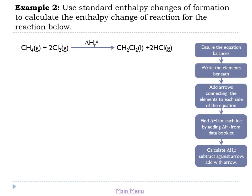Example two: use standard enthalpy changes of formation to calculate the enthalpy change of reaction for the reaction below. This one is a bit more complicated for a couple of reasons — on the product side we've got two compounds, and we've also got two HCls. So we'll need to account for both when we calculate ΔH2. First, ensure it balances: 1 carbon on each side, 4 hydrogens on each side, 4 chlorines on each side — yes, it balances.